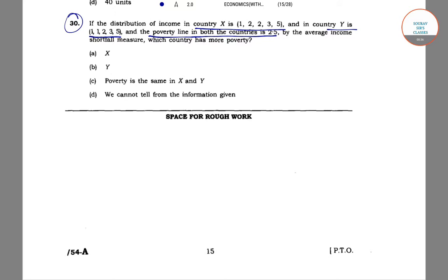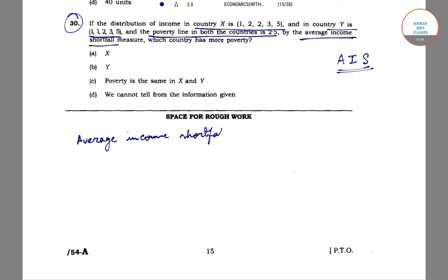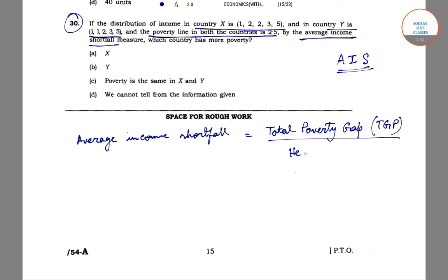By the average income shortfall measure, you have to determine which country has more poverty. The Average Income Shortfall (AIS) is equal to the Total Poverty Gap (TGP) divided by the headcount of poor — that is, the number of people living below the poverty line. This is the formula for measuring poverty using the AIS method.